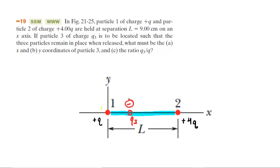Let's make Q3 negative, and that's going to turn out to work. If Q3 were negative, there would be a force from Q1 pulling Q3 to the left — we might call that F13. We would also have an attractive force between Q2 and Q3, because they're opposite in sign, acting between charges two and three. Those forces would cancel out, making the net force on Q3 equal to zero.